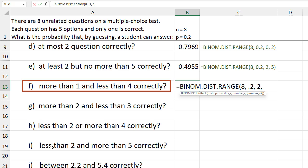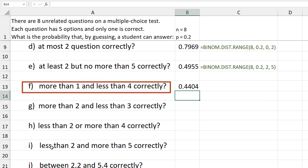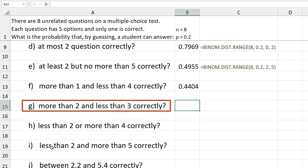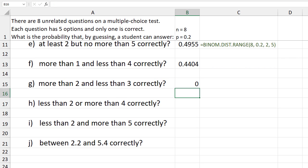For g, more than 2 and less than 3. Since binomial is a discrete distribution, there is no value between 2 and 3 exclusive. So the probability is 0.